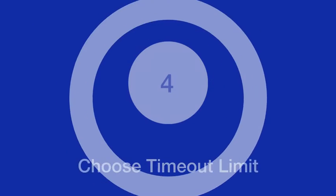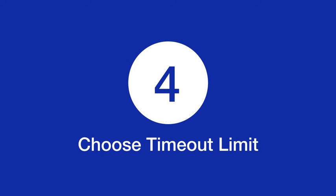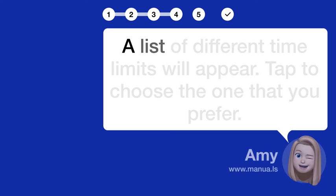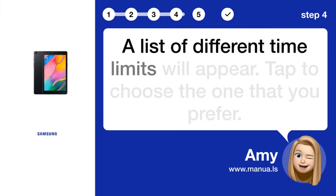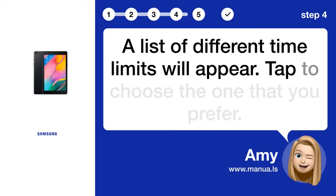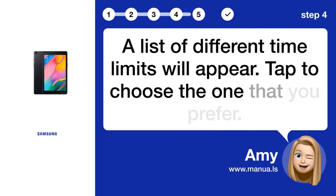Step 4: Choose timeout limit. A list of different time limits will appear. Tap to choose the one that you prefer.